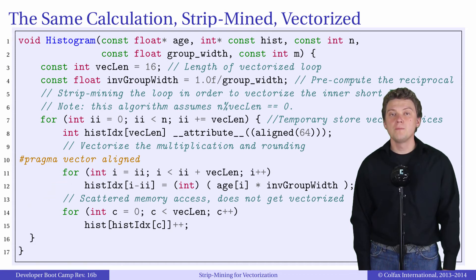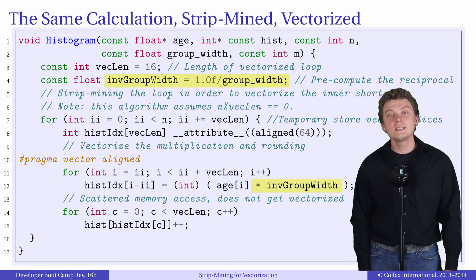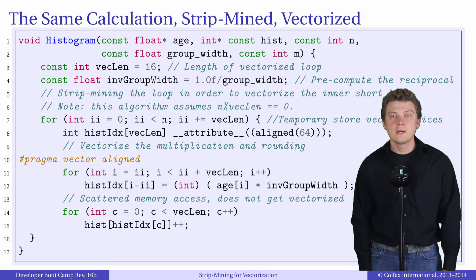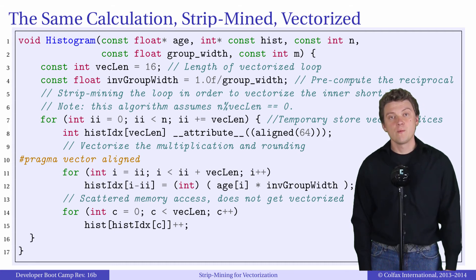In addition to strip mining, we made another optimization known as strength reduction. We replaced division by the group width with multiplication by the reciprocal of that number. The division instruction in modern CPUs is significantly slower than multiplication. And because we apply this operation to every element, our algorithm with multiplication should perform much better than with division.